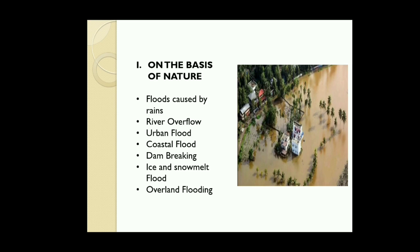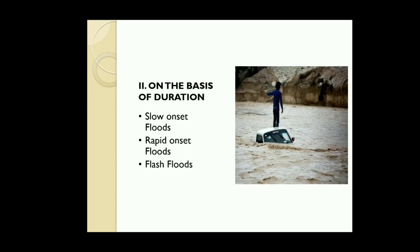Fifth, dam failure: sometimes high pressure of water causes rupture of dams and levees, resulting in flood. Sixth, ice and snow melt: in cold regions, due to temperature rise, snow melts causing massive movement of water into usually dry places. Lastly, overland flooding: it occurs when rainfall or snowmelt exceeds the capacity of underground pipes or streets and drains to carry flood water away in urban areas.